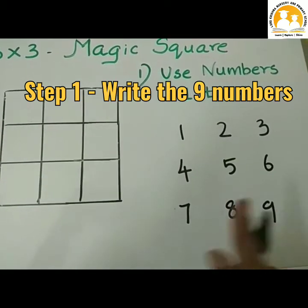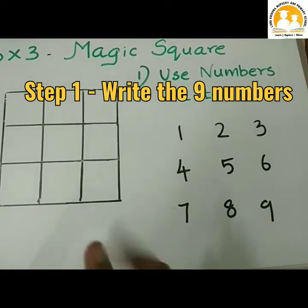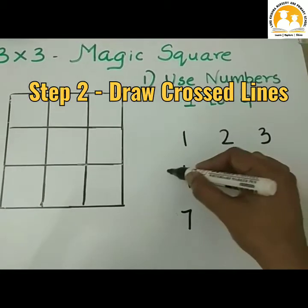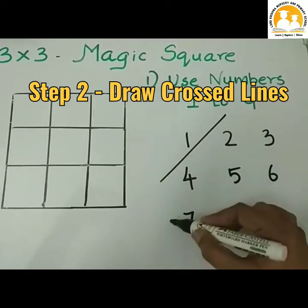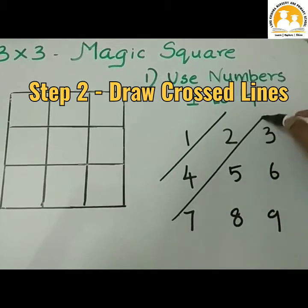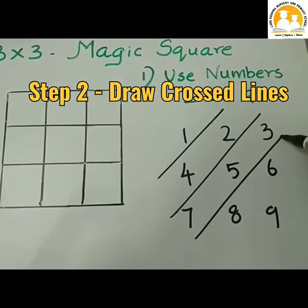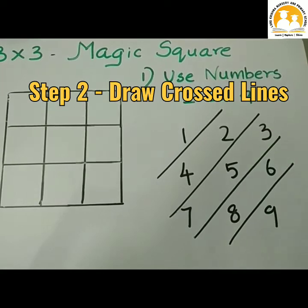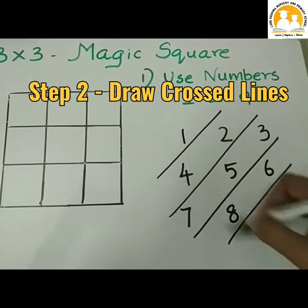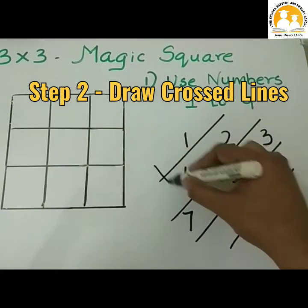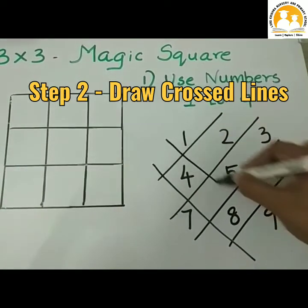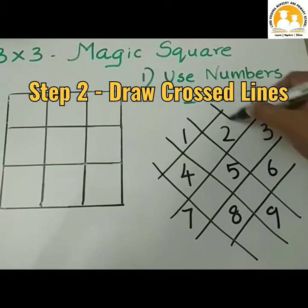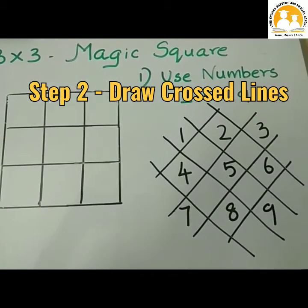The second step is to draw the cross lines like this — crossed lines in this direction.